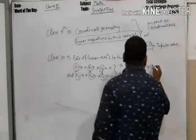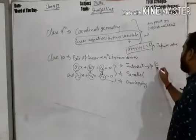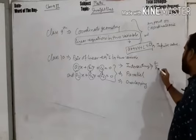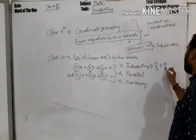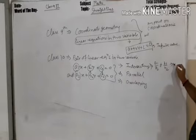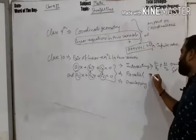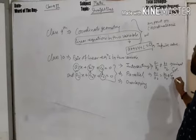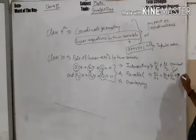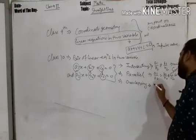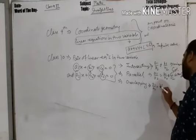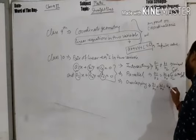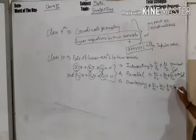The lines will be intersecting if the ratio of coefficients a1/a2 is not equal to b1/b2 — this represents a unique solution. The lines will be parallel if a1/a2 equals b1/b2 but not equal to c1/c2 — this represents no solution. And the lines will be overlapping if a1/a2 equals b1/b2 equals c1/c2 — this indicates infinite solutions.